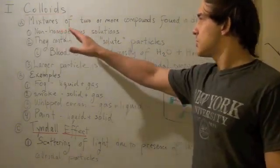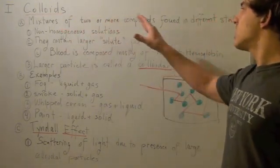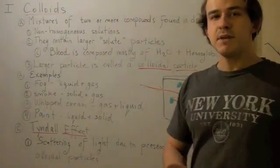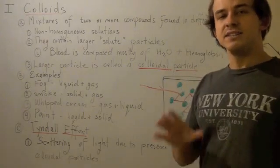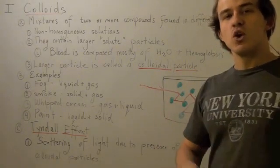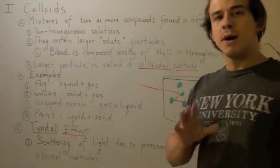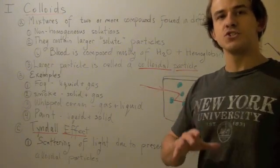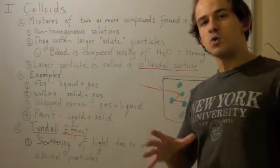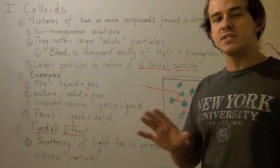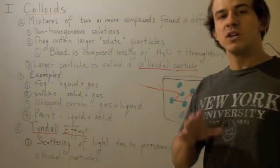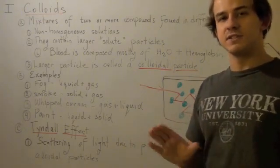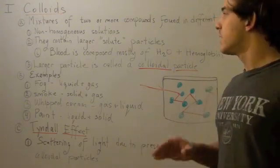Colloids are mixtures of two or more compounds found in different states, which means that they are non-homogeneous solutions. Recall that a homogeneous solution is one in which the compounds that compose the mixture are in the same state. Colloids are composed of compounds in different states.